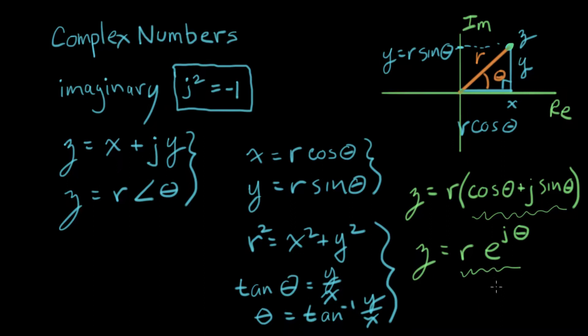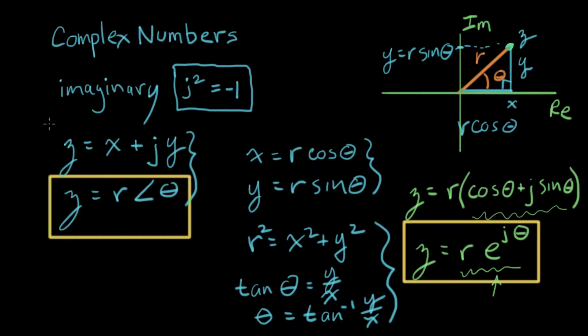And this form is going to be particularly useful, because if you remember, when we were solving all those differential equations, we always liked exponential solutions. So I want to put some squares around these guys. These are the three ways that we can represent a complex number, and they're all equivalent.